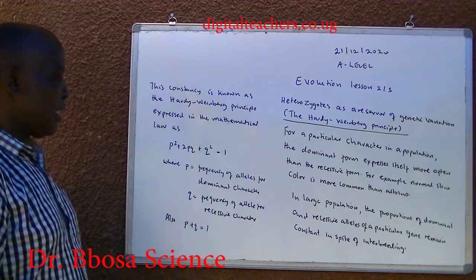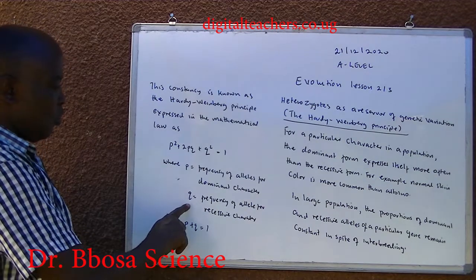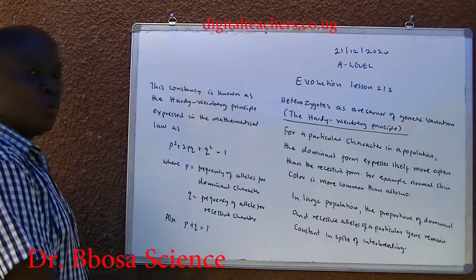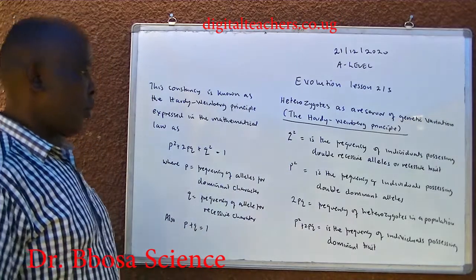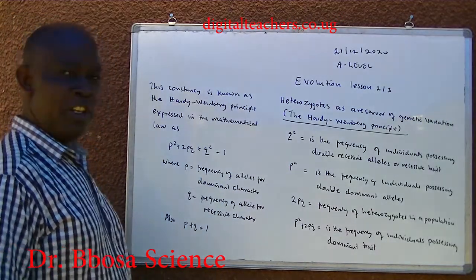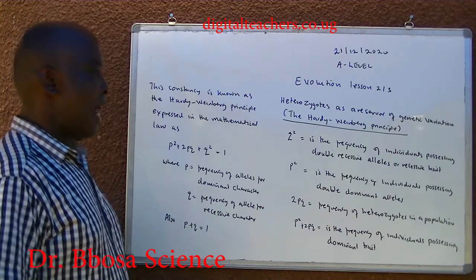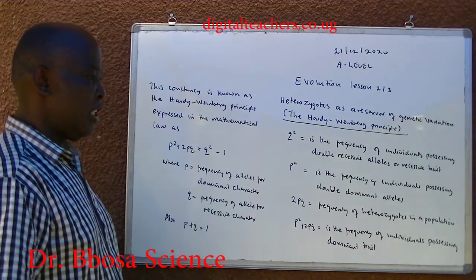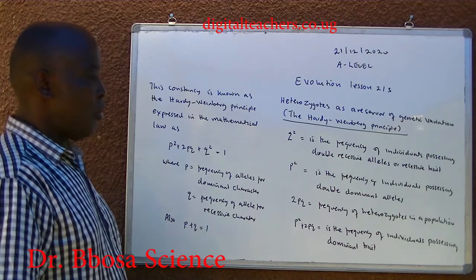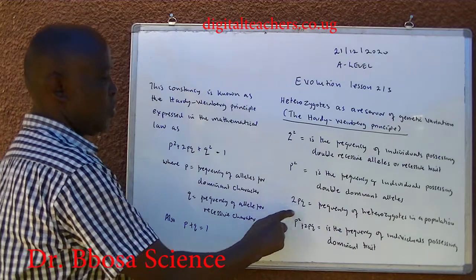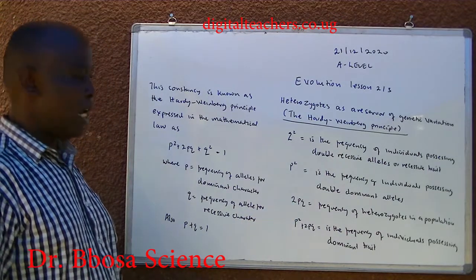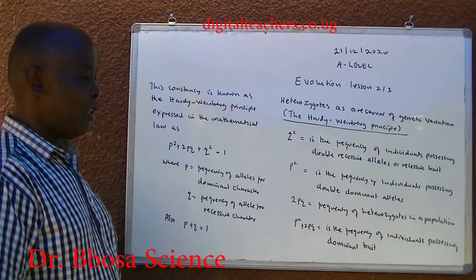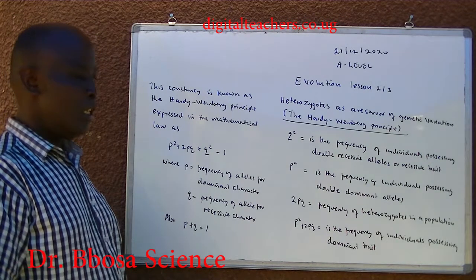The Hardy-Weinberg principle is expressed in the mathematical law as p² + 2pq + q² = 1, where p is the frequency of alleles for dominant character, and q is the frequency of alleles for recessive character. Also, p + q = 1. q² is the frequency of individuals possessing double recessive alleles, or recessive traits. p² is the frequency of individuals possessing double dominant traits. p² + 2pq is the frequency of individuals possessing dominant traits.